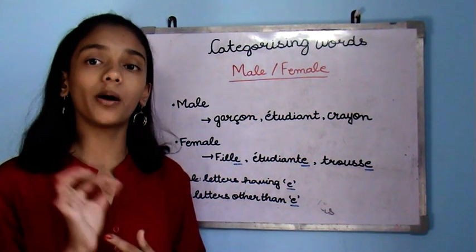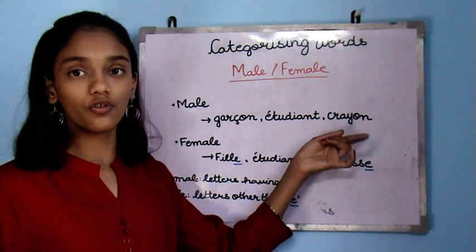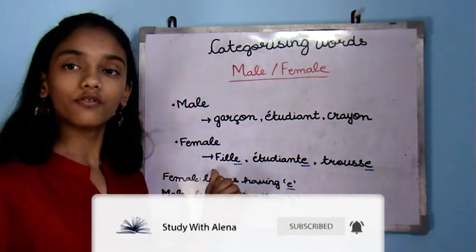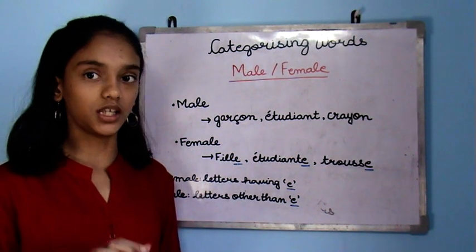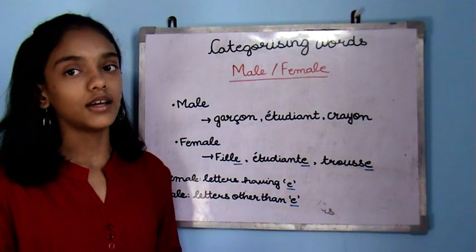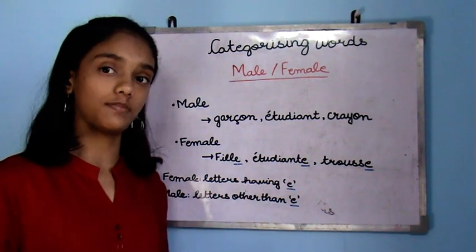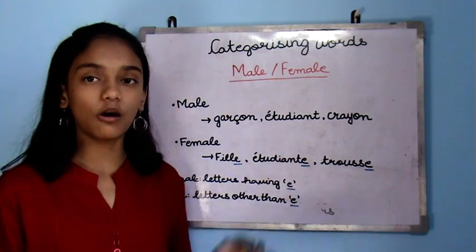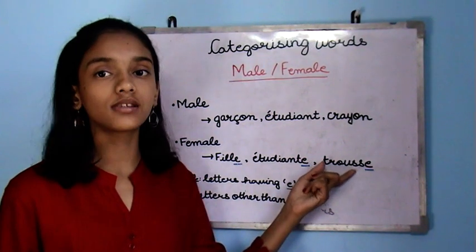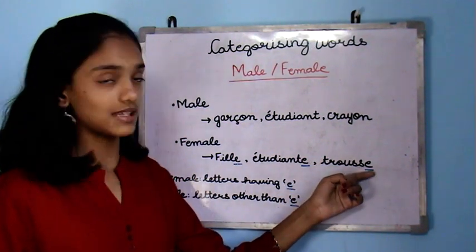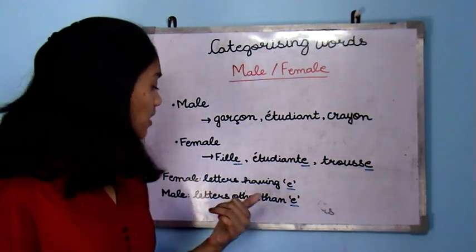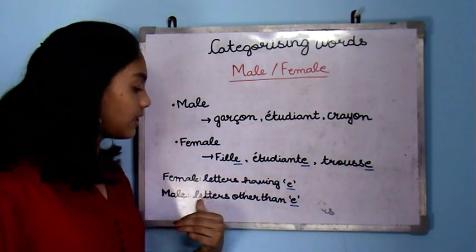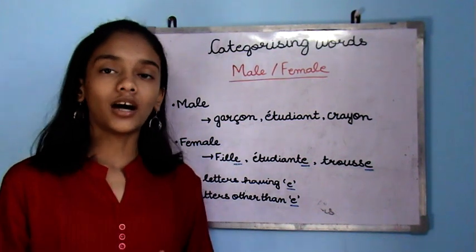Étudiant means a male student. Crayon, which means crayon, doesn't have an 'e' — that means it's masculine. For feminine, we have fille — fille means girl, it has an 'e' so it's a feminine word. Étudiante has an 'e', so we are talking about a female student. Trousse means a pouch and it has an 'e', so it's a feminine word. So for feminine words, they end in 'e', and for masculine words they end in a letter other than 'e'.